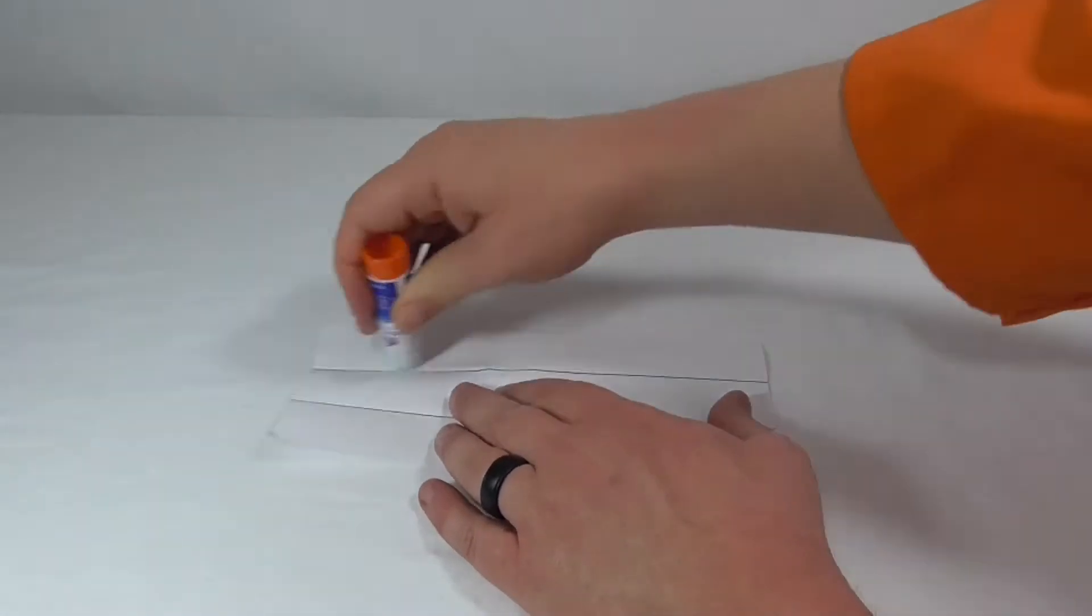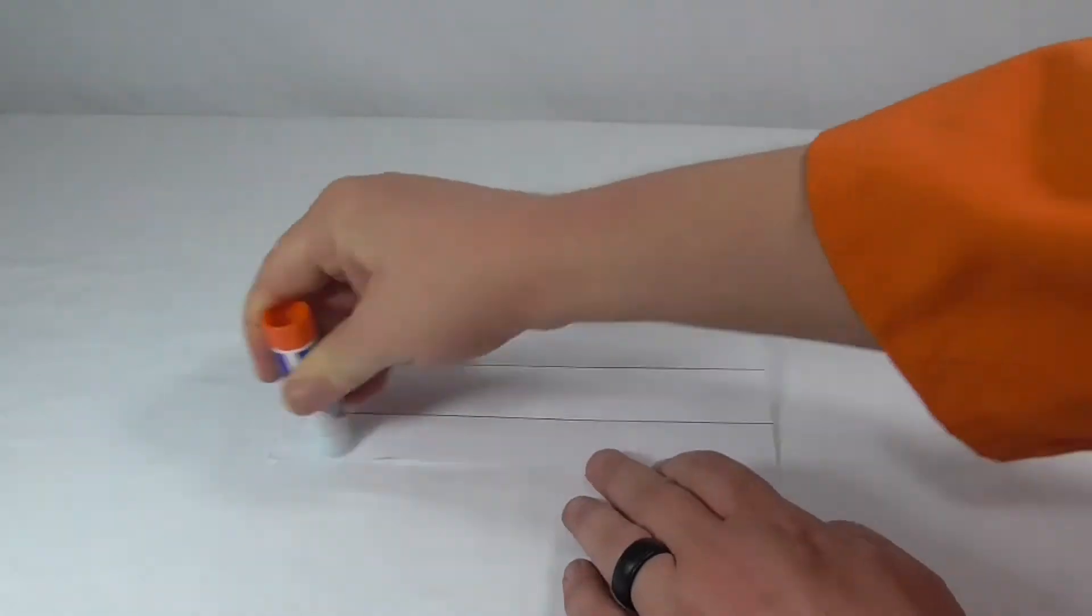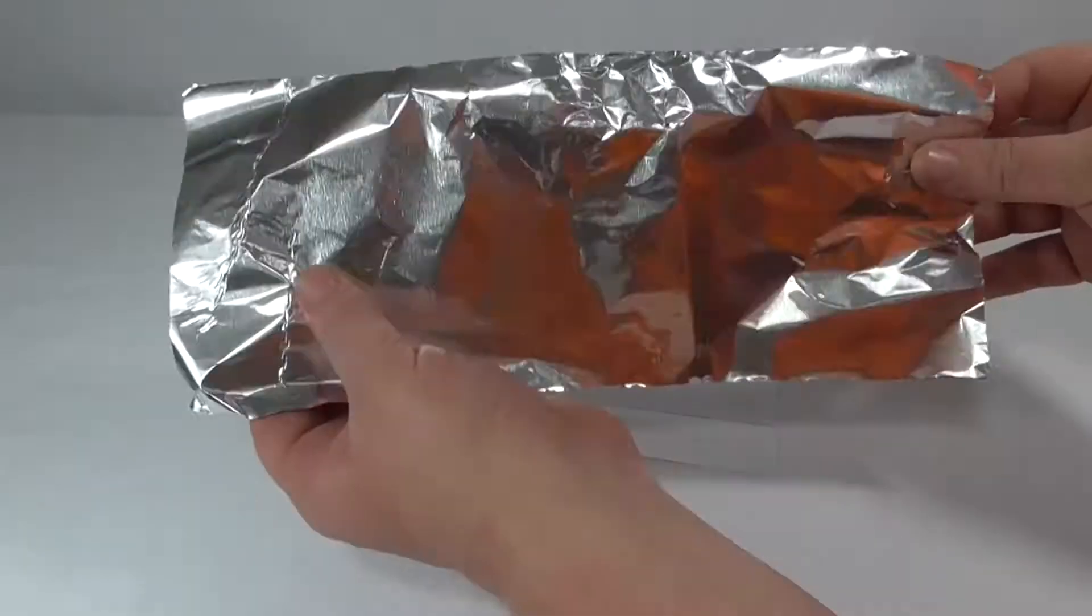Fold along the lines and then glue the foil onto the paper, shiny side up. Flatten and smooth the reflector.